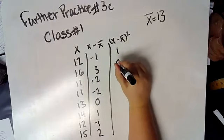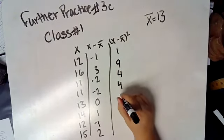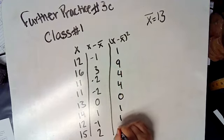That gives us 1, 9, 4, 4, 0, 1, 1, and 4.